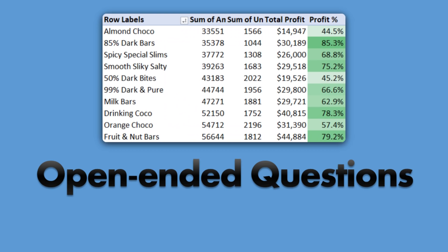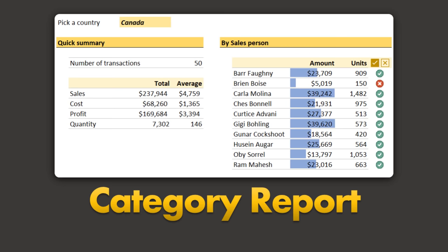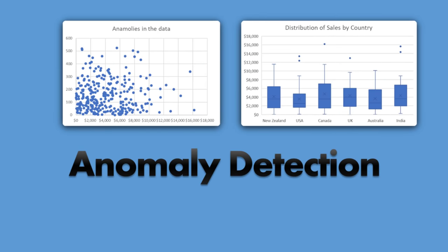We will also understand how to combine data that is in separate tables to get a consolidated view. We'll understand how to answer open-ended questions where there is no specific question, but you need to figure out the answer using data analysis. Finally, you are going to learn how to present the analysis using various types of charts, conditional formatting, and other visualization techniques available in Excel.